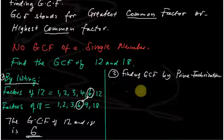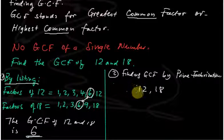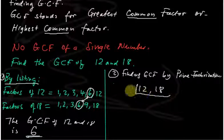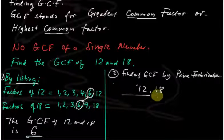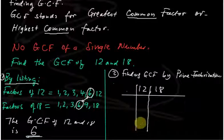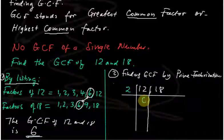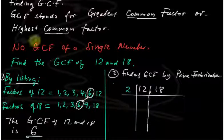We have 12 and 18. We divide each by prime numbers — 2, 3, 5, and so on. Starting with 2: 12 divided by 2 gives 6, and 18 divided by 2 gives 9.